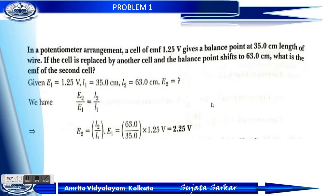Problem 1: In a potentiometer arrangement, a cell of EMF 1.25 volt gives a balance point at 35 cm length of wire. If the cell is replaced by another cell and the balance point shifts to 63 cm, what is the EMF of the second cell? According to the potentiometer equation: E2 by E1 equals L2 by L1. We have to find E2.